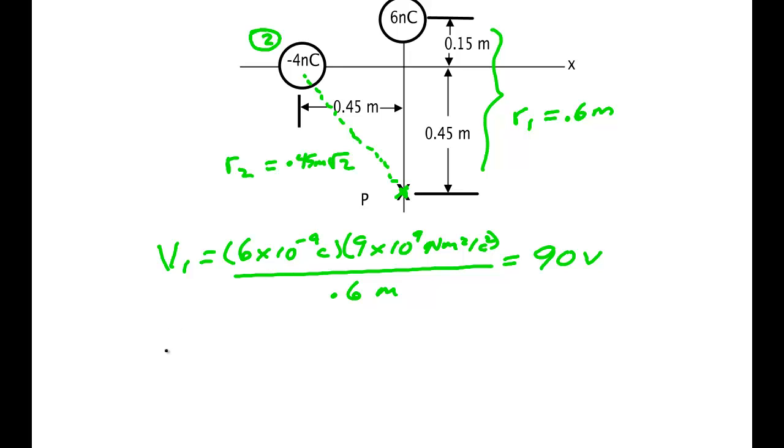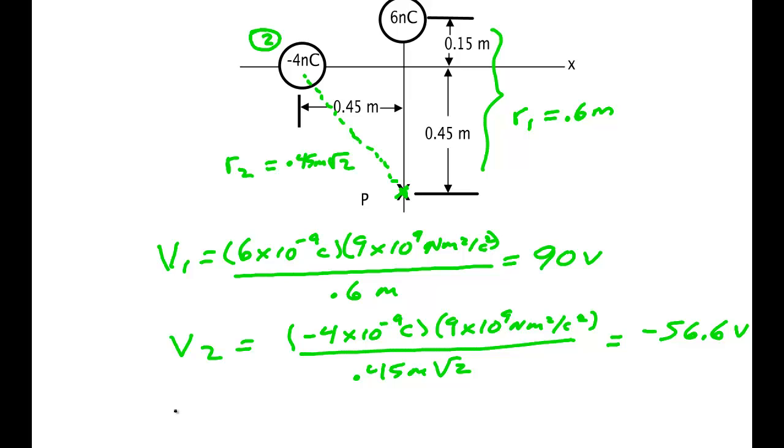For the second voltage here, for V2, that's going to be equal to minus four times ten to the minus nine coulombs times nine times ten to the ninth newton meters squared per coulomb squared. And then on the bottom I'm dividing by 0.45 meters times the square root of two. And I get a total of minus 56.6 volts. So the total voltage would be ninety volts plus a minus 56.6 volts, and I get 33.4 volts.